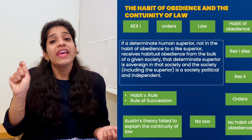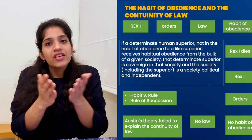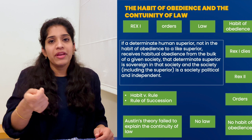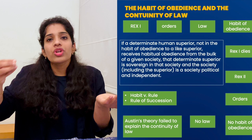यही HLA Hart हमें समझा रहे हैं — कि Austin की theory में 'habit of obedience' का notion use होने के कारण continuity of law में break आ रहा है। Hart कहते हैं यह break इसलिए आ रहा है क्योंकि Austin ने habit और rule के बीच का difference नहीं समझा। और अगर उस country में rule of succession होता, तो Rex 1 की death के बाद Rex 2 जिस दिन से orders pass करना शुरू करते, उसी दिन से उनके orders law माने जाते — habit of obedience की बात आती ही नहीं।